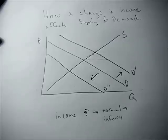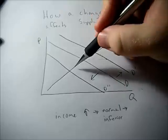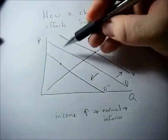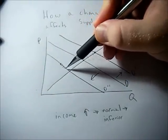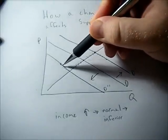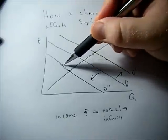Demand goes down. At the original price, there's now a surplus, so price will drop. This means quantity supplied goes down and quantity demanded goes up until we get a lower equilibrium price and lower equilibrium quantity.